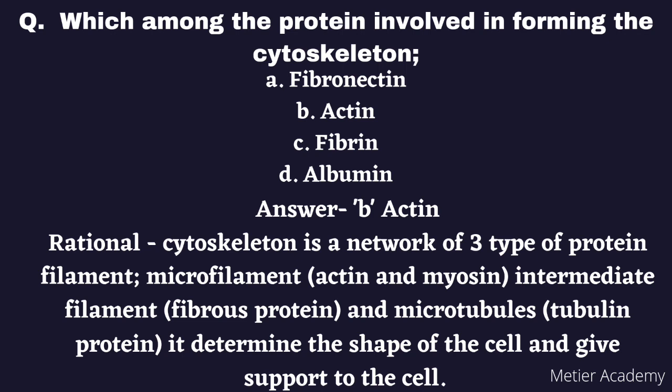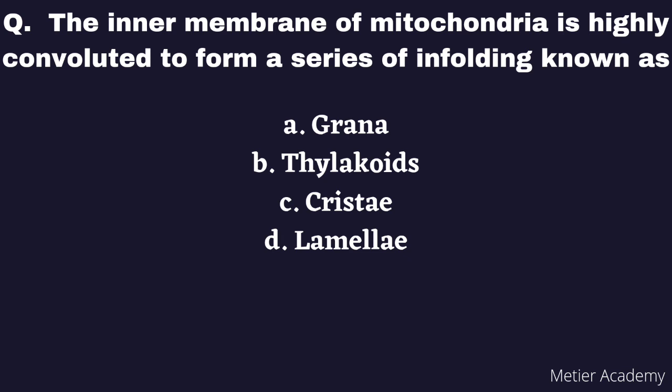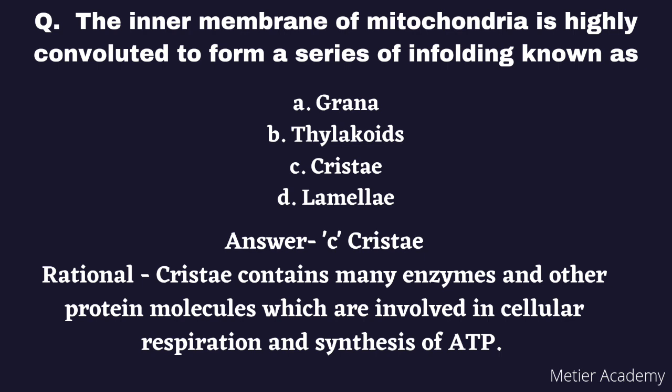The next question is: The inner membrane of mitochondria is highly convoluted to form a series of infoldings, which is known as. Options are: A) Grana, B) Thylakoids, C) Cristae, D) Lamellae. The correct answer is Option C, Cristae. Cristae contain many enzymes and other protein molecules involved in cellular respiration and synthesis of ATP.